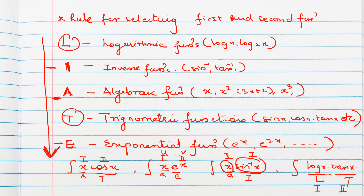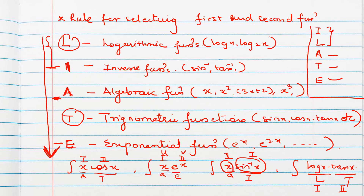The LIATE rule is given in the state board, but some books use ILATE rule where the first two letters are interchanged. The order stands for the same functions — logarithmic, inverse, algebraic, trigonometric, and exponential. In your class, combinations of I and L together won't be given since that is for higher classes, so whether you remember LIATE or ILATE it will not affect your solution.